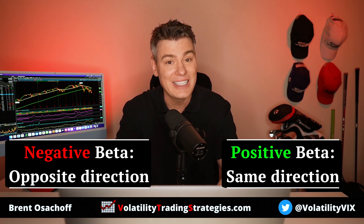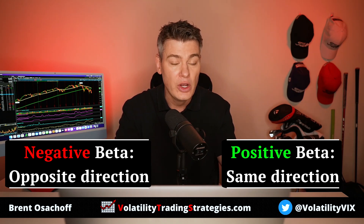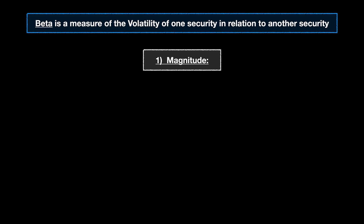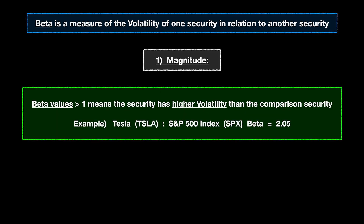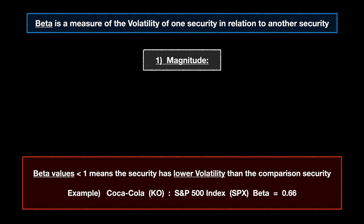So direction is the first thing beta tells us — positive or negative values determine whether securities tend to move in the same or opposite direction. But there's another variable: magnitude. Beta values greater than one mean the security has higher volatility than the comparison security — it moves more. Look no further than Tesla stock: Tesla has a five-year beta factor to the S&P 500 of 2.05, meaning on average long term Tesla has about double the volatility of the S&P 500.